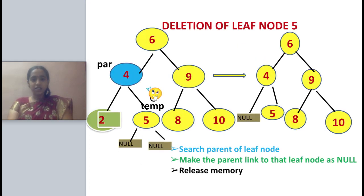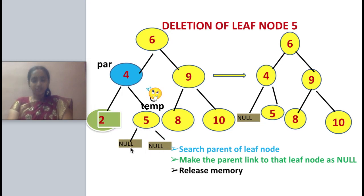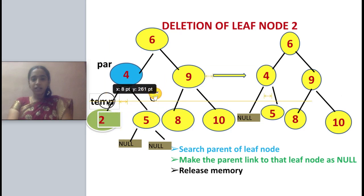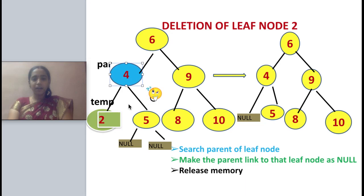Let us see each case and how to write code. For deletion of a leaf node, the first line will be identifying the case. How will you say that a node is a leaf node? When the left child and the right child of a particular node is equal to null, it is a leaf node. For example, if I am trying to delete node 2, I'll search the binary search tree with key 2, so the temp node and the parent node will be located. 2 is the temp node and the parent of 2 is 4.